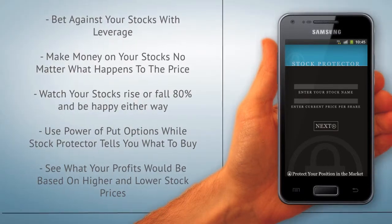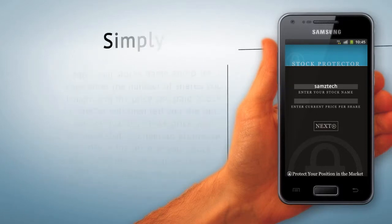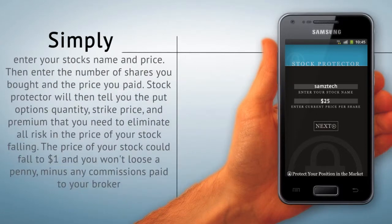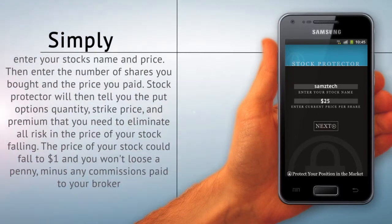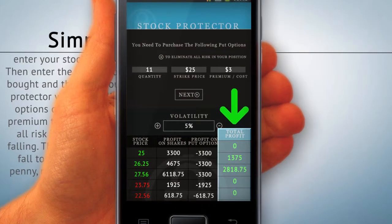Simply enter your stock's name and price, then enter the number of shares you bought and the price you paid. Stock Protector will then tell you the put option's quantity, strike price, and the premium that you need to eliminate all risk of your stock's price falling.